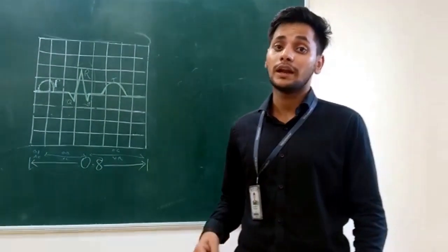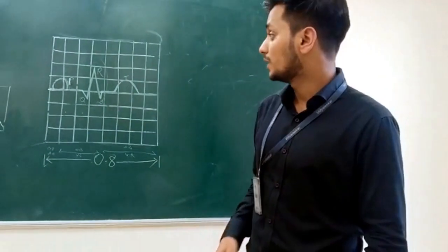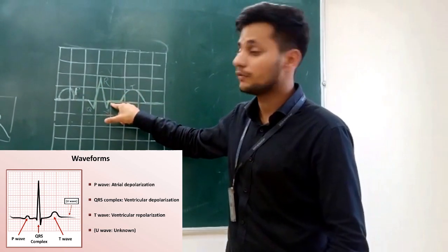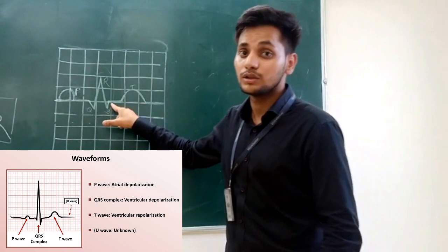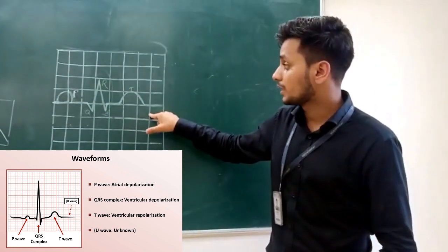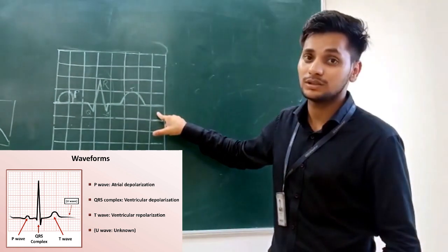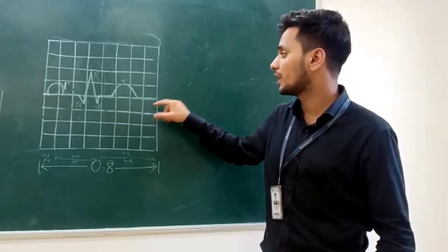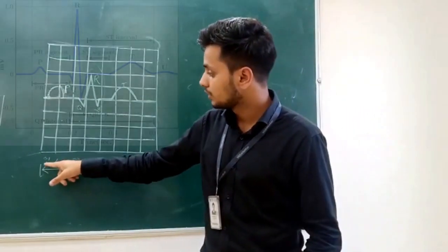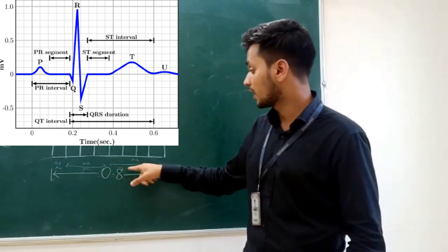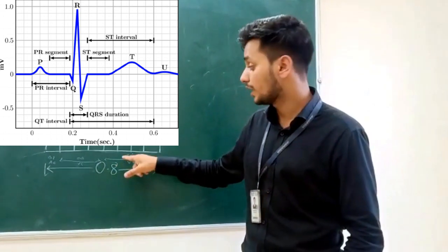When the SA node generates an impulse, it travels throughout the atrium, causing atrial contraction — this is represented by the P wave. The QRS waveform indicates ventricular contraction. Moving to the T wave, this indicates ventricular relaxation. Atrial relaxation cannot be shown because it is hidden within the complex QRS structure. The timeline: atrial contraction takes 0.1 seconds, ventricular contraction takes 0.3 seconds, and ventricular relaxation takes 0.4 seconds.